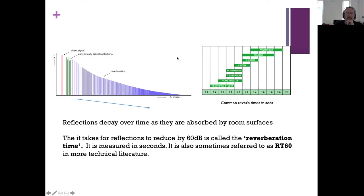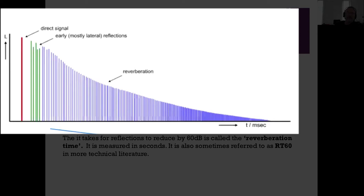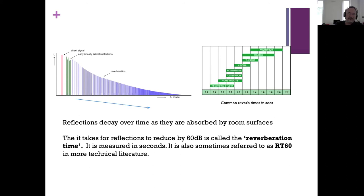When we look at it in the time domain, we can see the direct signal in red — that's the thing that arrives first and it's the loudest because it's not bouncing off anything. Then you have the first reflections, which are the first boundaries it hits, arriving next. Then later reflections from second and third bounces form the reverberation tail, spread out over time. As sound bounces around the room, a little is absorbed each time until the reverberation tail fades to nothing.